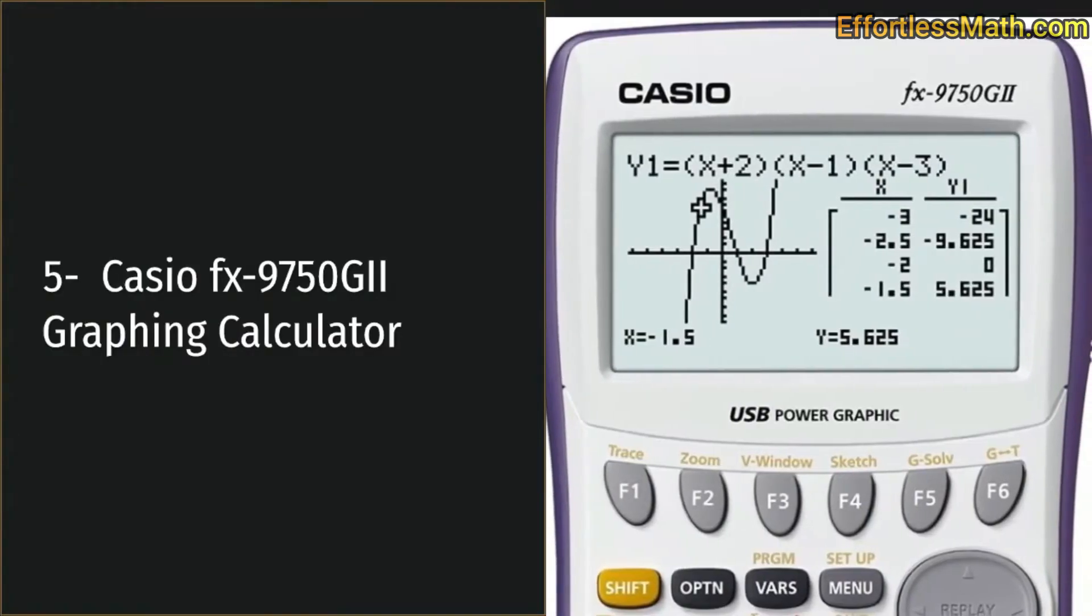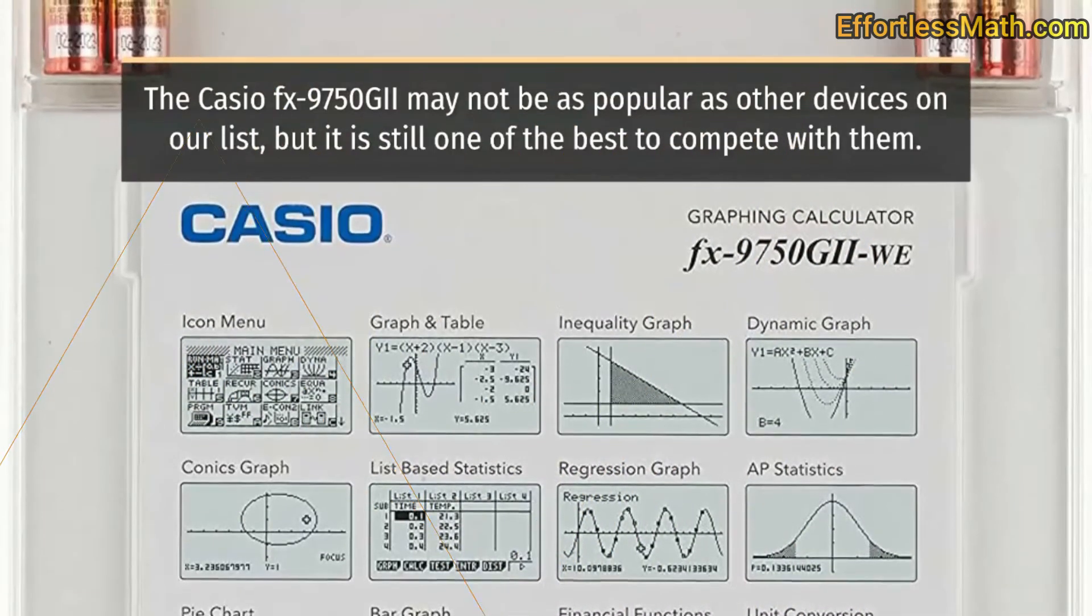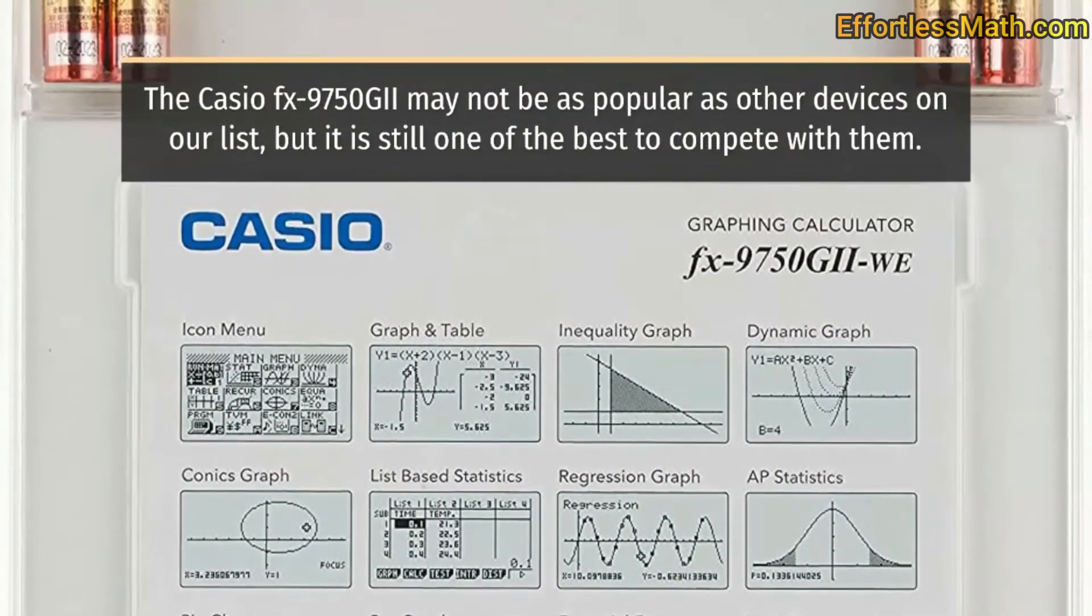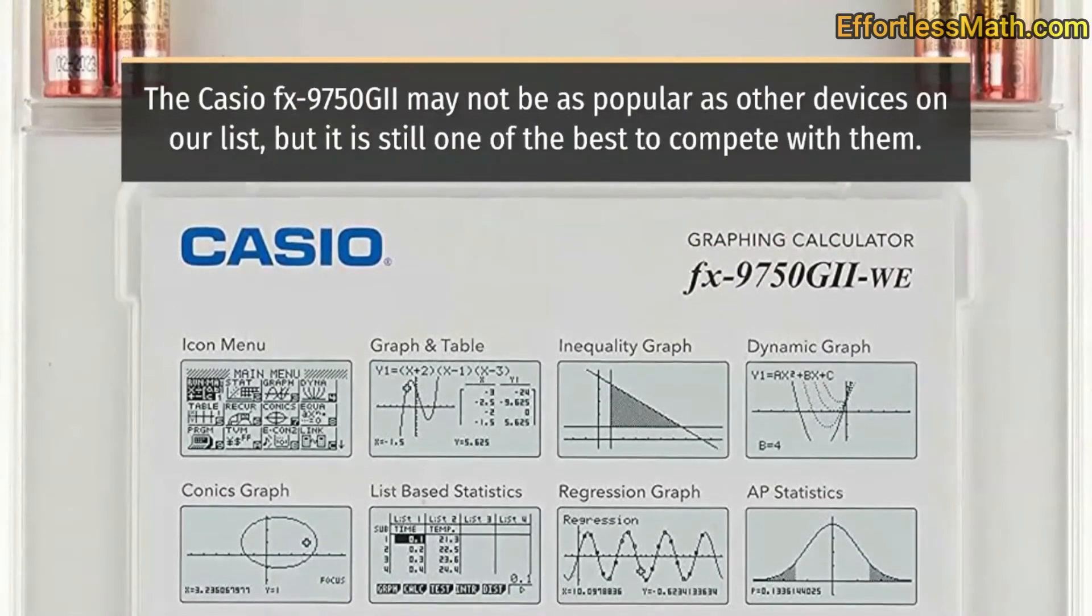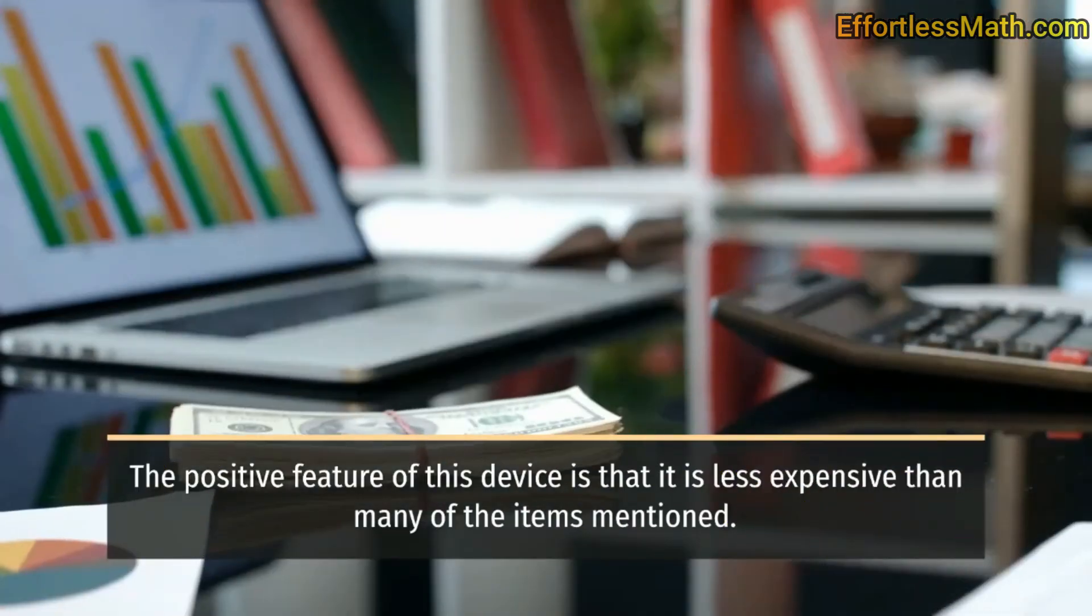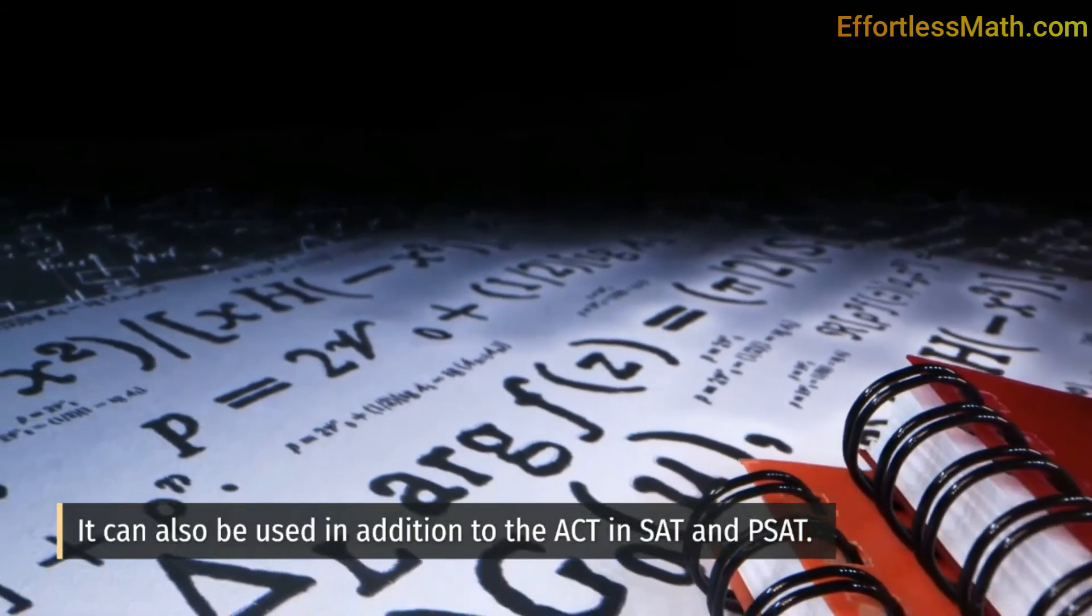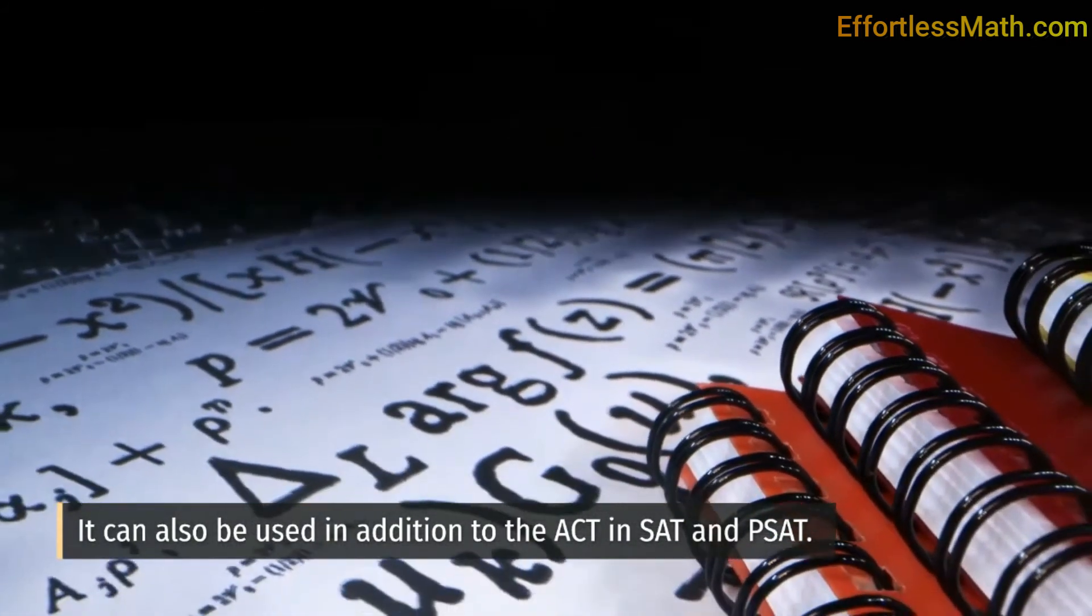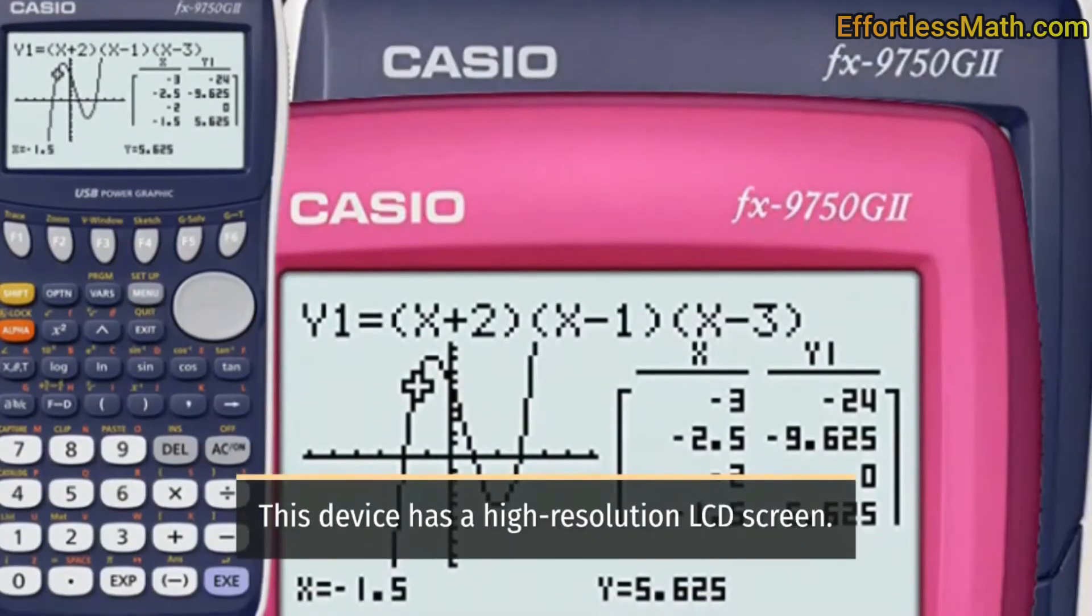Five: Casio FX-9750G2 graphing calculator. The Casio FX-9750G2 may not be as popular as other devices on our list, but it is still one of the best to compete with them. The positive feature of this device is that it is less expensive than many of the items mentioned. It can also be used in addition to the ACT in SAT and PSAT.